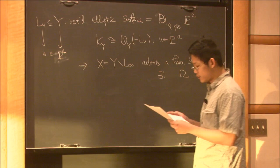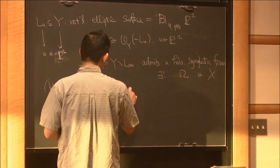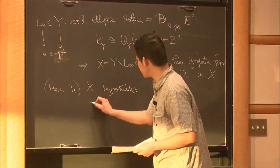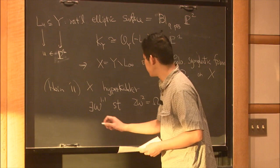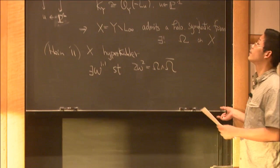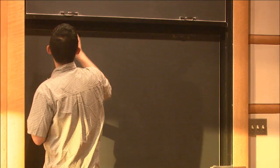This form is unique up to C*-scaling. More than that, one can prove that X is actually hyperkähler — not only holomorphic symplectic, but also hyperkähler — meaning there exists a Ricci-flat metric. This is a (1,1)-form satisfying the complex Monge-Ampère equation.